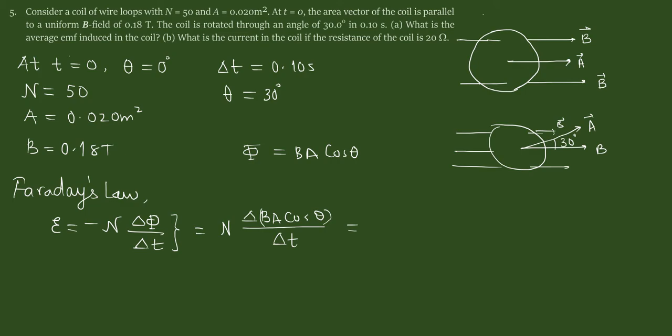Now in this case we are changing angle and we are keeping B and A constant. We are not changing B and A. So we can pull B and A out of this delta because there is no change in B and A.